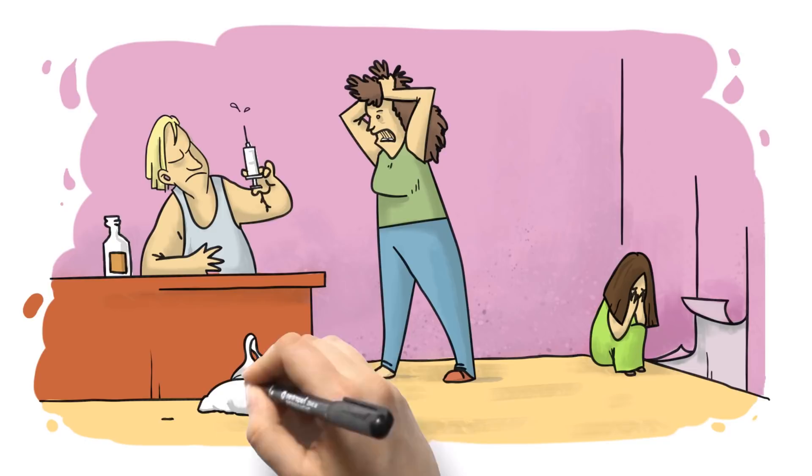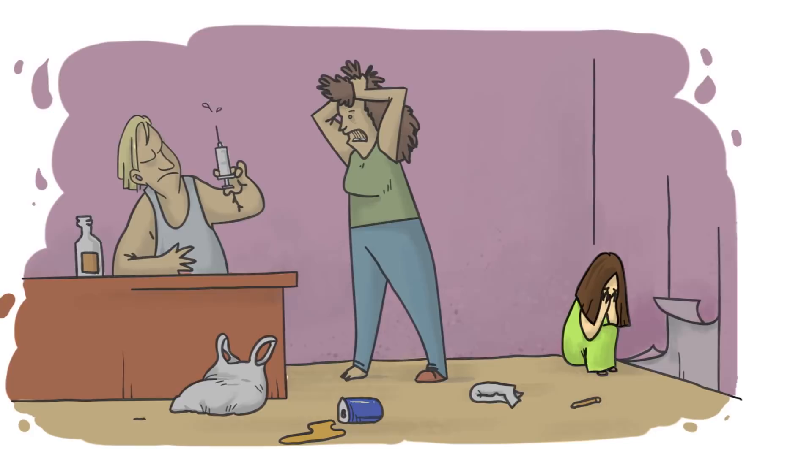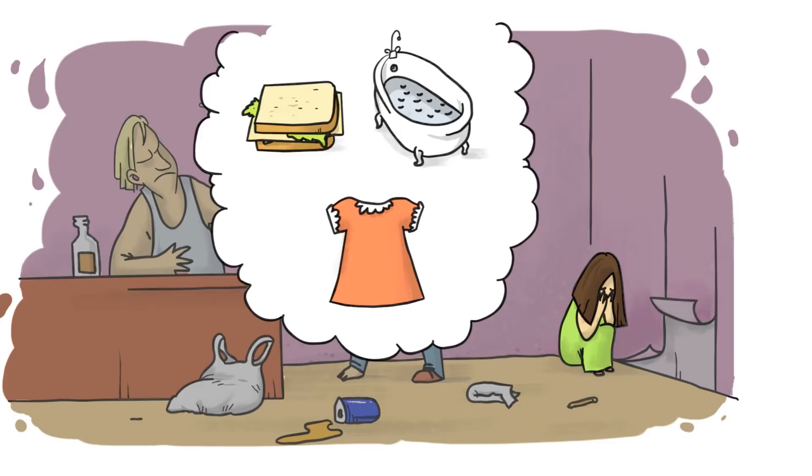Grace's house smelled of urine and had dirty nappies on the floor, and there was no food in the cupboards. In their distracted state, her parents were simply not able to meet Grace's most basic needs.